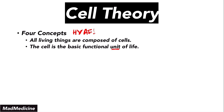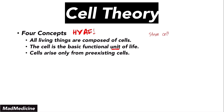Number three: cells only arise from pre-existing cells. We know that cells are derived from something called stem cells. Stem cells then differentiate and become different types of tissues — tissue one, tissue two, tissue three — but all of these tissues are actually composed of multiple cells. So cells come from pre-existing cells.